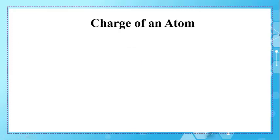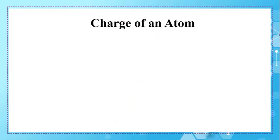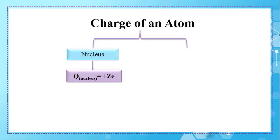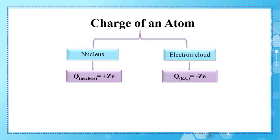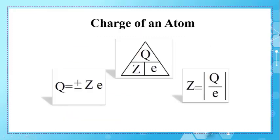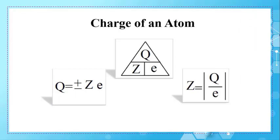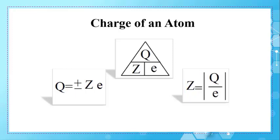Back to the first question: what is the charge of an entire atom? It's the sum of the charges of its nucleus and its electron cloud. Since the charge of the nucleus is +ZE and that of the electron cloud is −ZE, their sum is zero — the atom is electrically neutral. We end up with Q = +ZE for the nucleus and −ZE for the electron cloud. We can also derive Z = |Q| / E. Since Z is a positive number, we use the absolute value. Sometimes you are asked to verify the elementary charge: E = |Q| / Z.